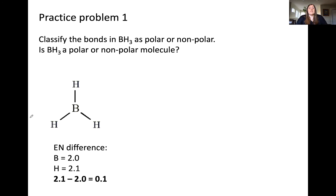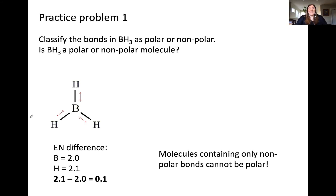Now let's calculate the difference in electronegativity between boron and hydrogen. The difference in electronegativity is 0.1, which means the boron-hydrogen bond is effectively nonpolar, although there is a very small difference in electronegativities. If you were to indicate this with a vector, you'd use very tiny vectors to indicate only a slight electron density difference within this bond. One important consequence of having a molecule with only nonpolar bonds is that the molecule itself must also be nonpolar — there is no way to have a polar molecule that only has nonpolar bonds.